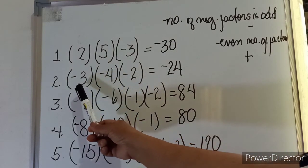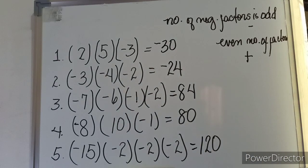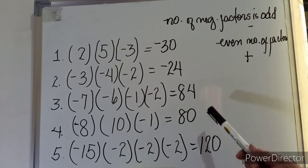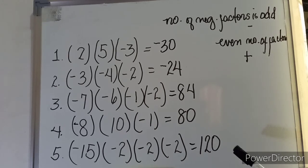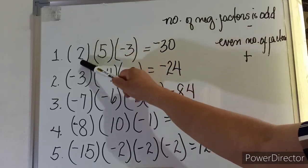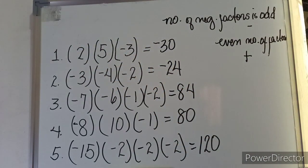Look at example one — one negative factor: one is odd, so the result is negative. Example two has three negative factors: three is odd, so the result is negative. Example three has four negative factors: four is even, so the result is positive. Examples four and five also have four negative factors, so the results are positive. By the way, parentheses can also mean multiplication — not only the times sign, but grouping symbols also indicate a multiplication operation.